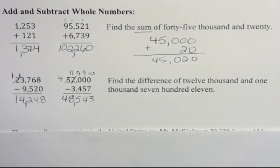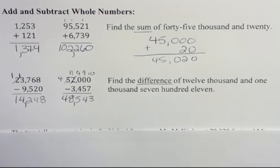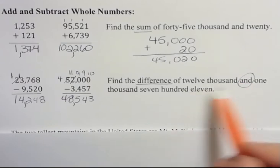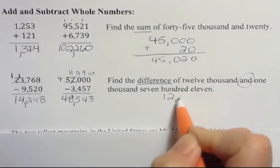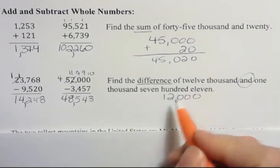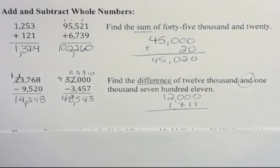Here it says, find the difference of 12,000 and 1,711. Well, first, I want to know what we're doing. We're subtracting because it's difference. And the 'and' separates the two values. So I have 12,000, which is this, and 1,711. That's what that looks like.